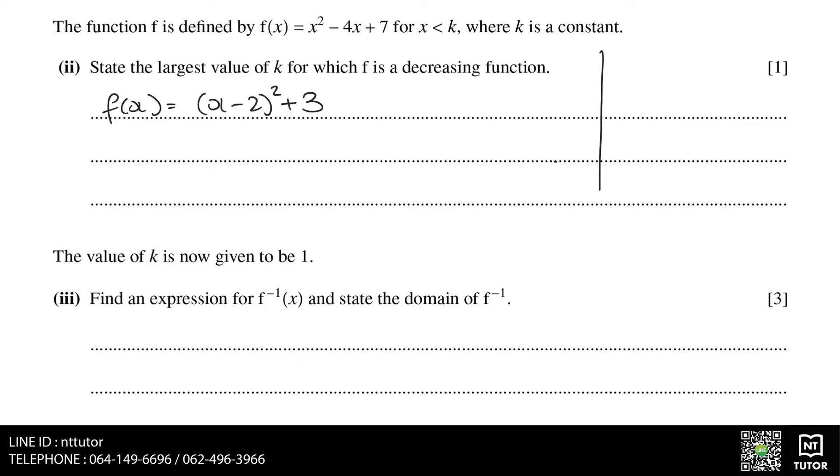In the completed square format, it tells us the coordinates of the vertex. In this case, the coefficient of x squared is positive, so we have a curve that opens upwards, and the coordinates of the middle point are at (2, 3).